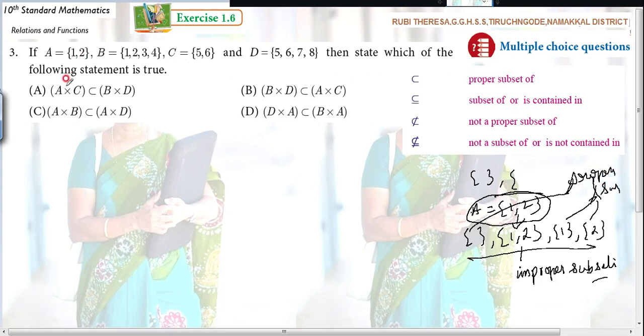So the elements present are either empty or less than the given number of elements. Now, they are asking whether A×C is proper subset of B×D, B×D is proper subset of A×C. First, for better understanding, you write the elements. Actually, by seeing the question itself you will be able to say, but better you write A×C. First, smaller set I am writing. Next, B equals {1, 2, 3, 4}. Then D equals {5, 6, 7, 8}.